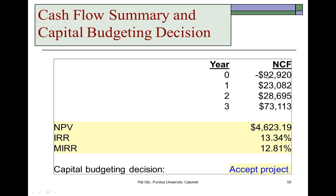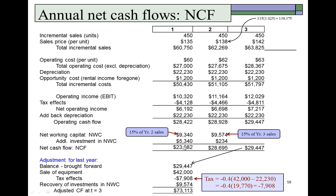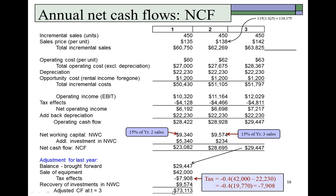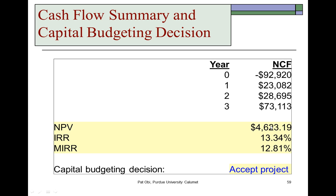In summary, the initial cash flow is -$92,920. The annual net cash flows are $23,082 in year one, $28,695 in year two, and the adjusted final net cash flow is $73,113 in year three. Using the NPV function on a spreadsheet or calculator, the NPV is positive and both the IRR and MIRR exceed the cost of capital of 11%. Based on this outcome, we conclude the project should be accepted. This presentation was by Pat Obey, Professor of Finance, Purdue University Calumet.